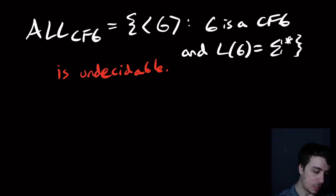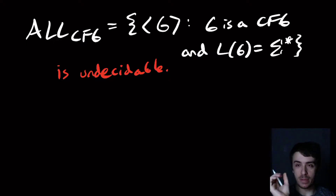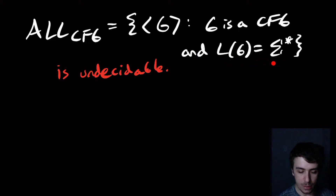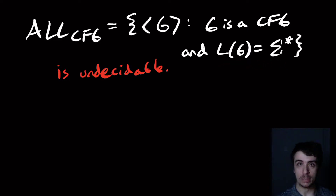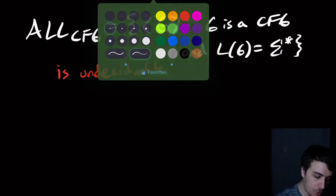We're going to do something similar to the ELBA video, where we encode all the accepting computation histories — but instead of into an LBA, we're going to do it into the CFG. The grammar is going to generate every string if the Turing machine either accepts w or doesn't, and it's going to be not Σ* in the other condition. So we're going to bake the Turing machine running on input w right into the context-free grammar.